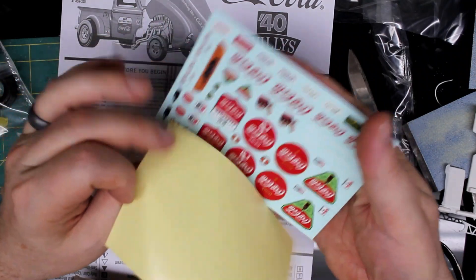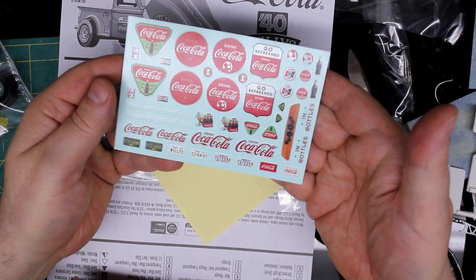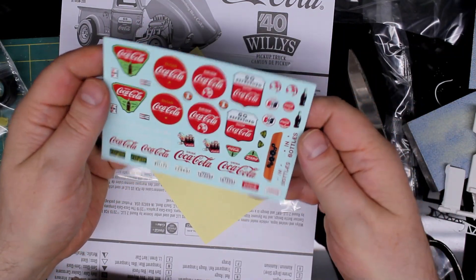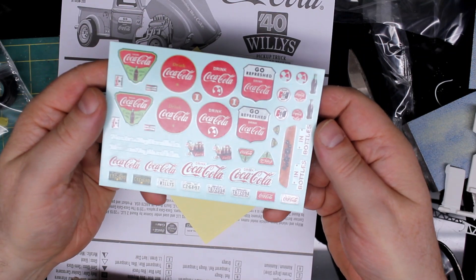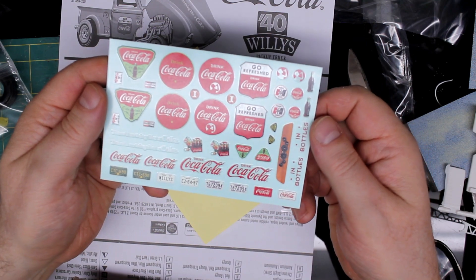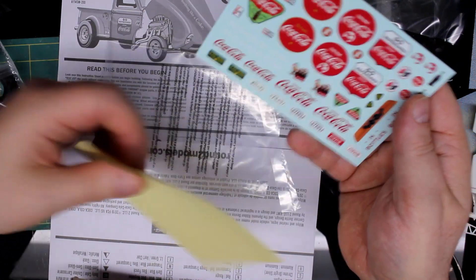Here's the decals. Mostly Coca-Cola stuff. They look pretty good. Good coloring to them. There's a dashboard with woodgrain. That's pretty groovy. A couple Coca-Cola bottles. So that's that.